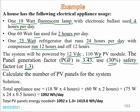The solution: total appliances use is 18W × 4h plus 60W × 2h plus 75W × 12h (the refrigerator runs with its compressor for only half of 24 hours, so we multiply by 0.5). The total result is 1092 watt-hours per day.